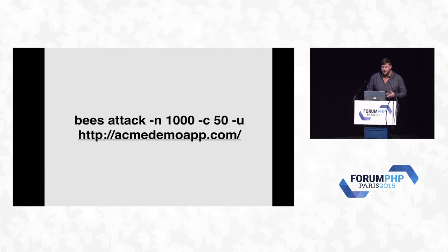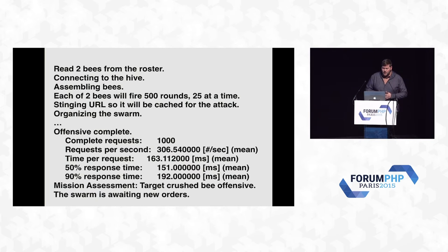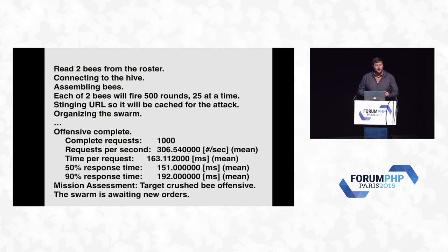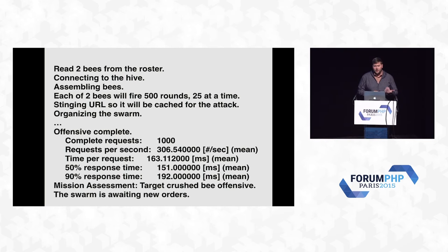So we call bees attack — -n for the total number of requests and -c for concurrency. In this case, 50 concurrent users against acmedemoapp.com. We completed 1,000 requests — each of the two bees fires 500 rounds, 25 at a time. They'll sting the URL first to prime the cache, then discard it and run the real load test. With a concurrency of 50, we get 306 requests per second, but the average latency is 163 milliseconds. This is the only project I know that says it's a felony in the US to run against any site but your own, because this is effectively a distributed denial of service attack.